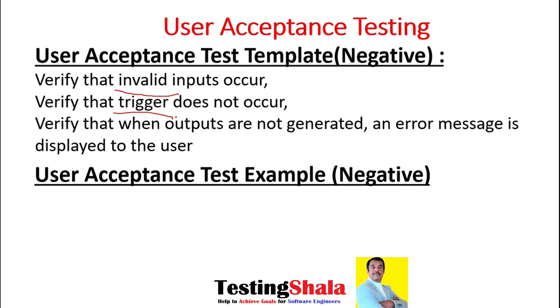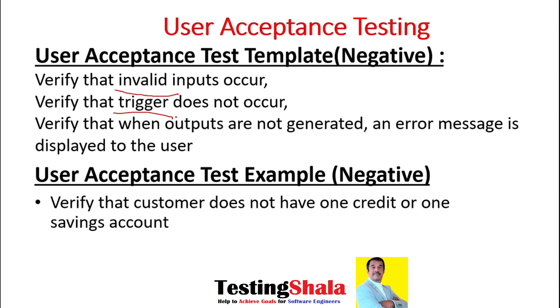When login doesn't happen, it doesn't generate any account number or anything; instead it should throw an error message. Now we will see how the negative user acceptance test case example looks.